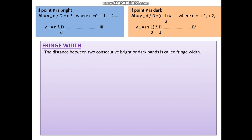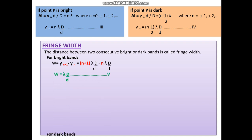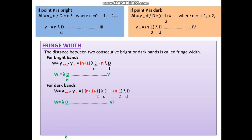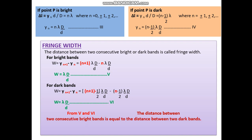The fringe width is the distance between two consecutive bright or dark bands. For bright bands, w equals y(n+1) minus yn equals (n+1) lambda D/d minus n lambda D/d, giving w equals lambda D divided by d. For dark bands, w equals y(n+1) minus yn equals (n + half) lambda D/d minus (n minus half) lambda D/d, again giving w equals lambda D divided by d. Therefore the fringe width w equals lambda D divided by d, whether for bright or dark fringes.